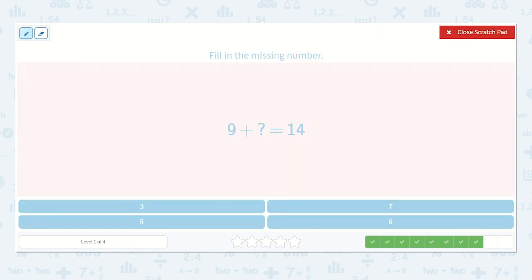9 plus a number is equal to 14. So we know we have 9. 10, 11, 12, 13, 14. That is 1, 2, 3, 4, 5. Alright, our missing number was 5. Do you see it down below? Yep, it's right here.